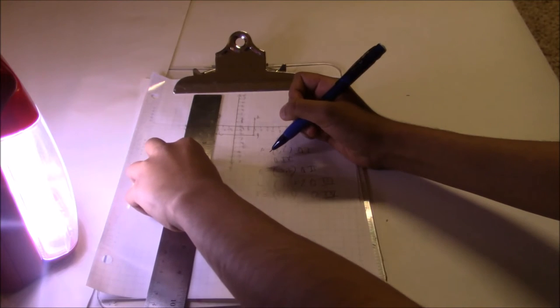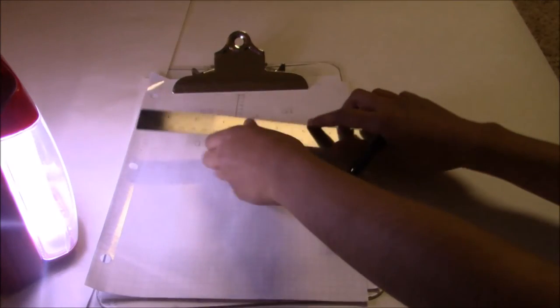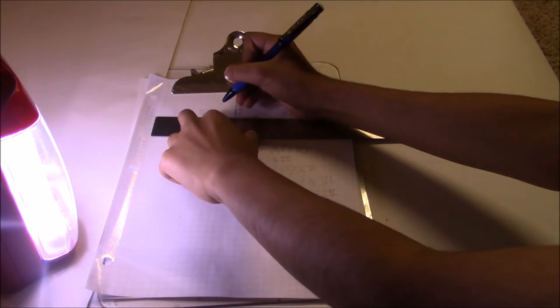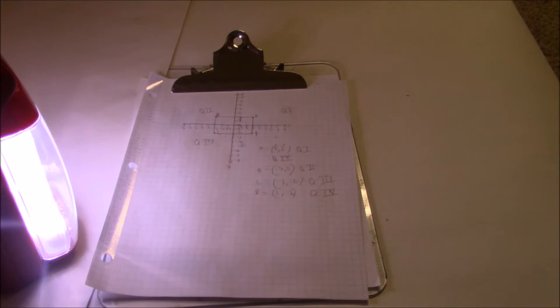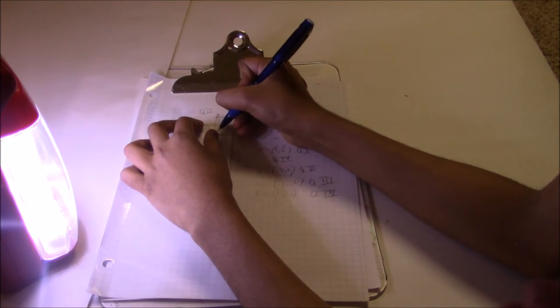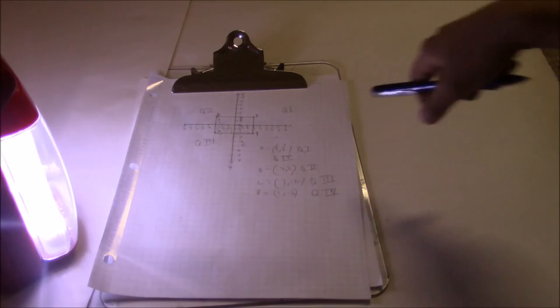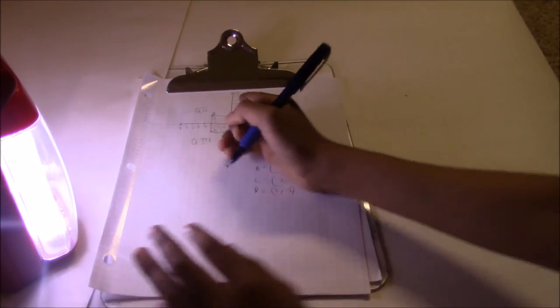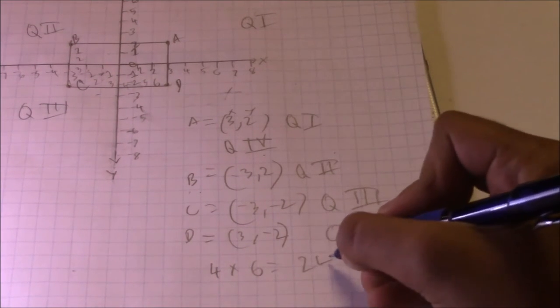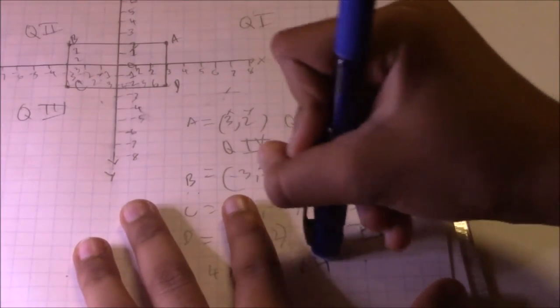Now we're going to find the area and the perimeter. This is a rectangle. Counting the units: one side is 4 units and the other side is 6 units. So 4 times 6 equals 24. The area is 24 square units.